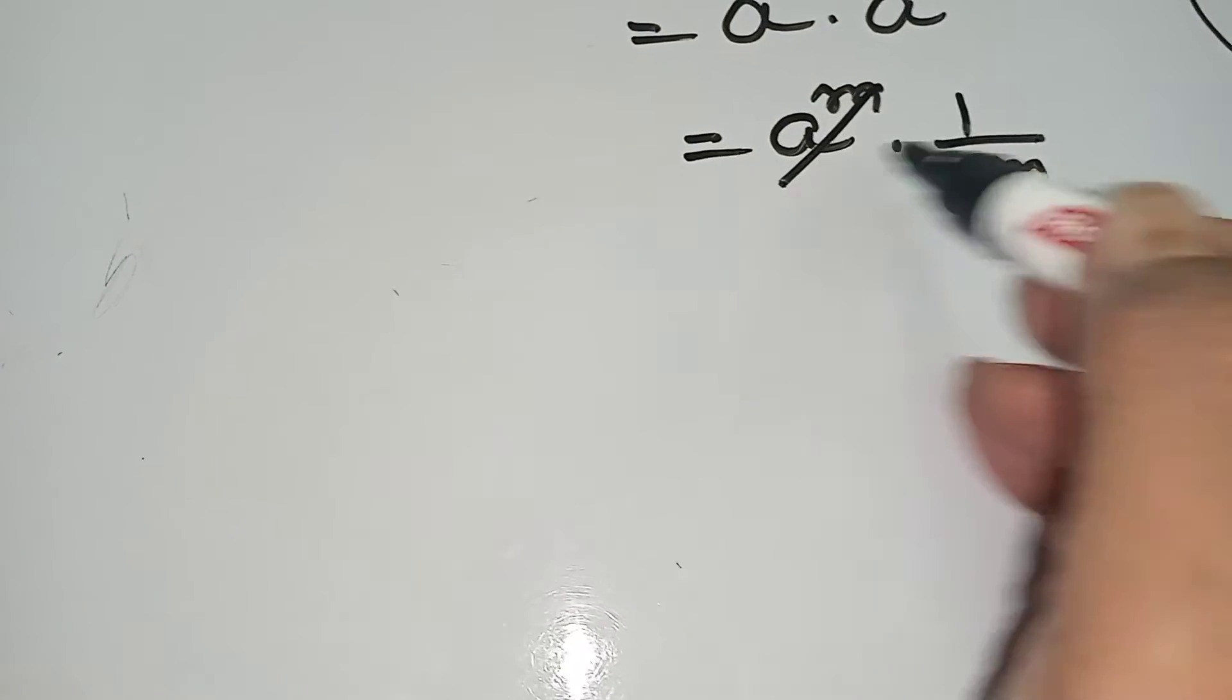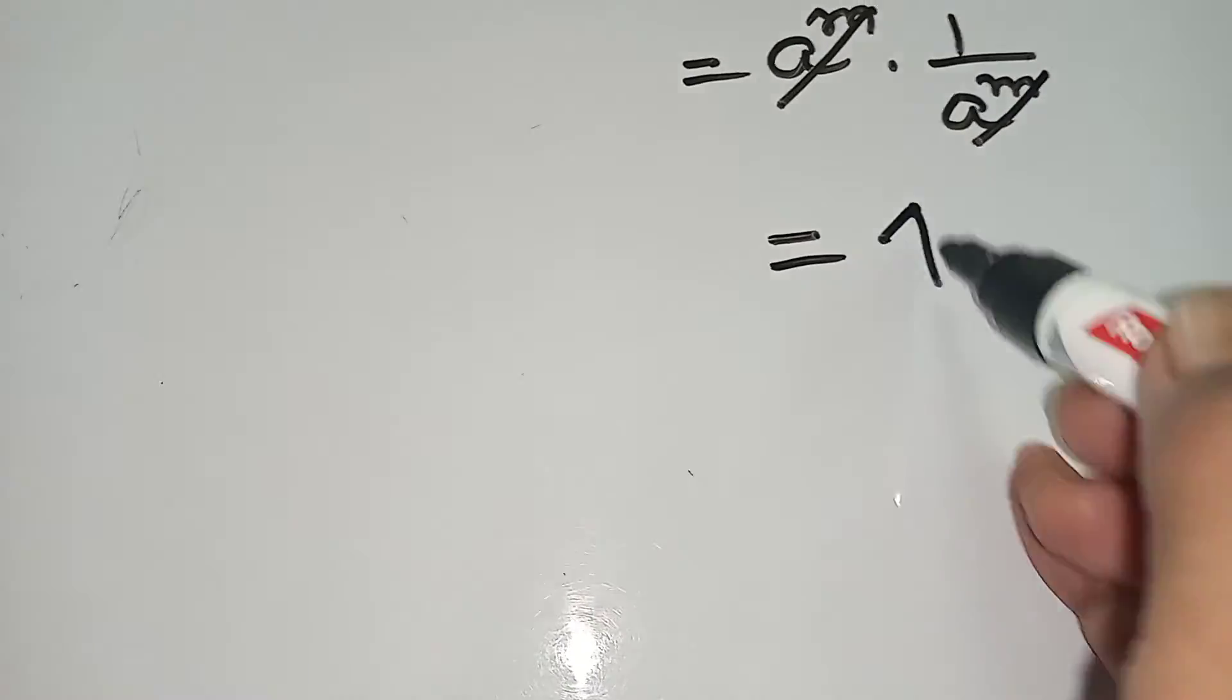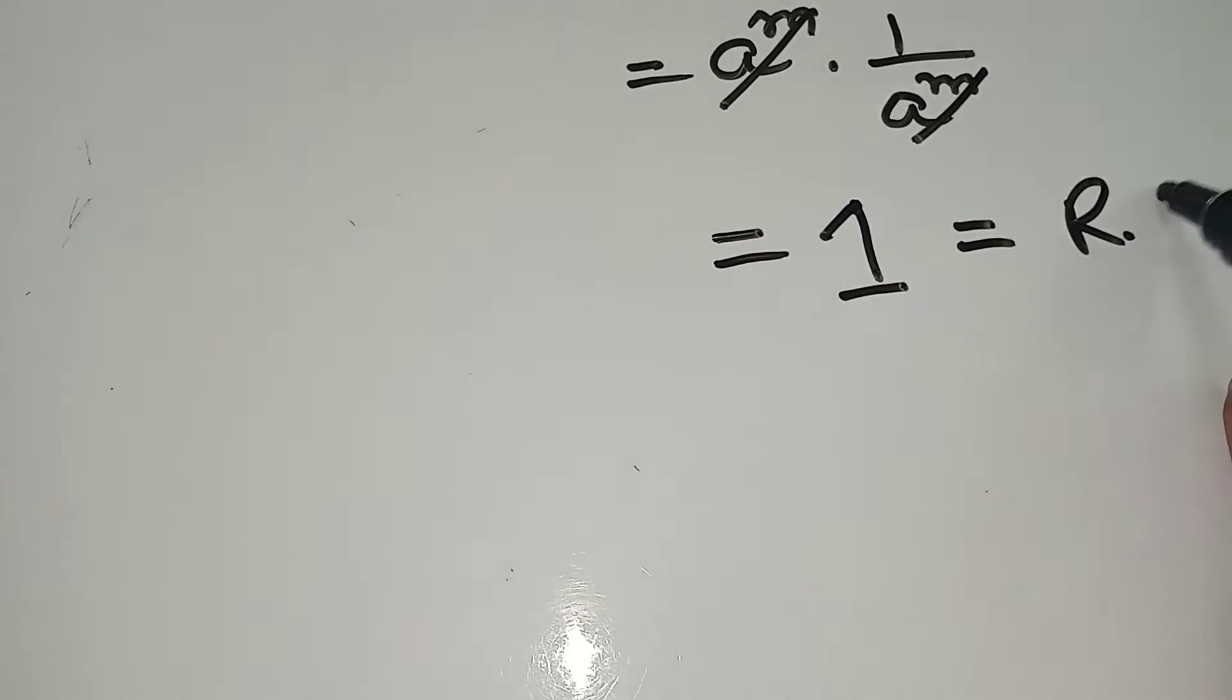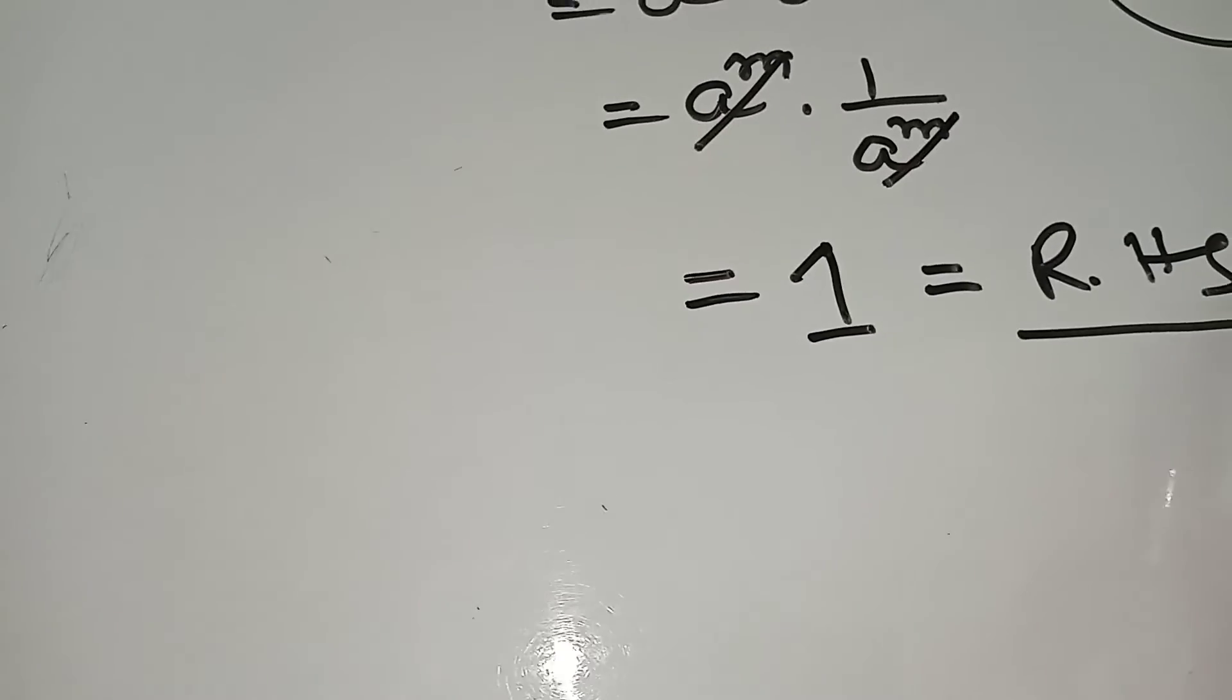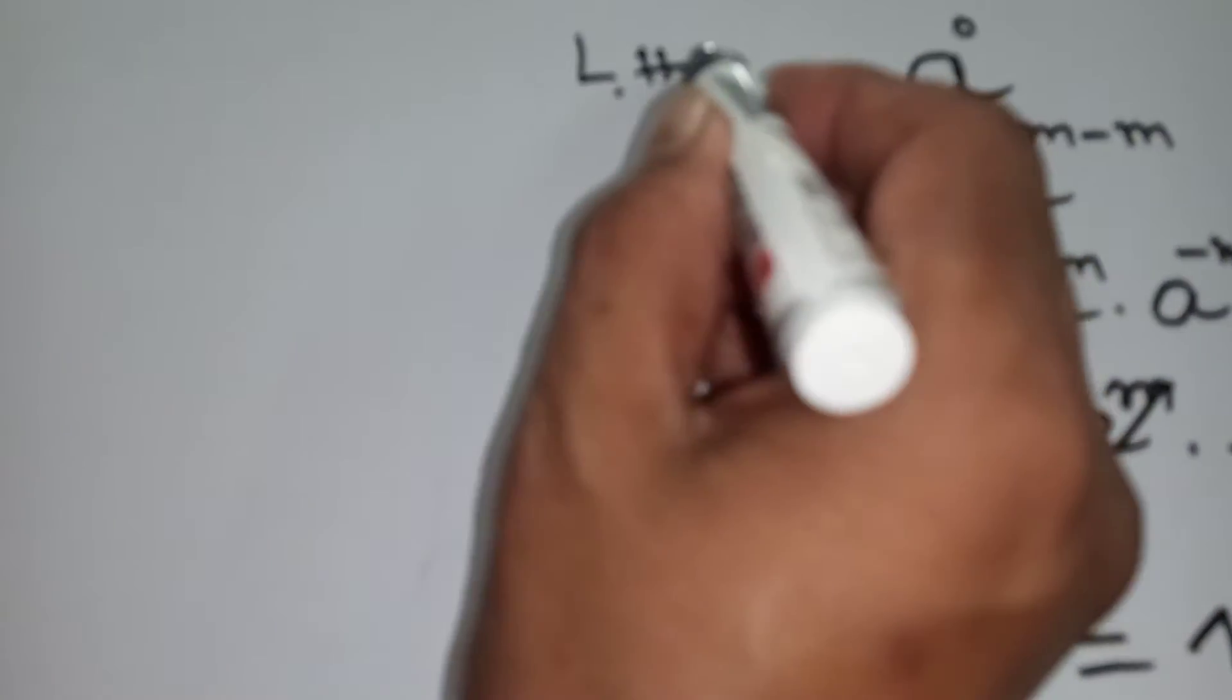Now this and this will be cancelled. That means this equals 1. This is the right hand side, or this is the left hand side.